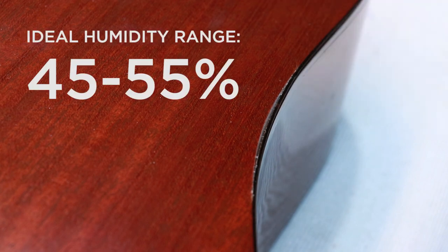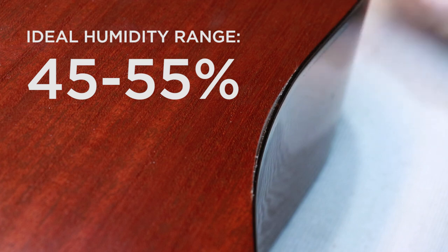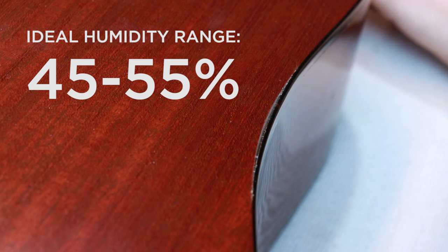So before you glue the binding you want to make sure that the guitar is at an appropriate humidity. Now I know that this guitar right now is around 50% humidity and I know that this binding can easily be pushed back tight against the guitar, so I'm ready to start the glue up.